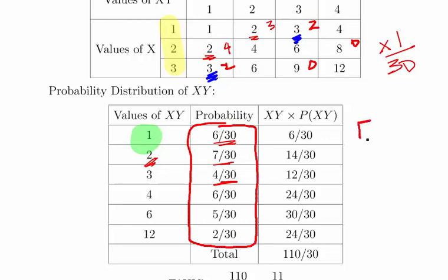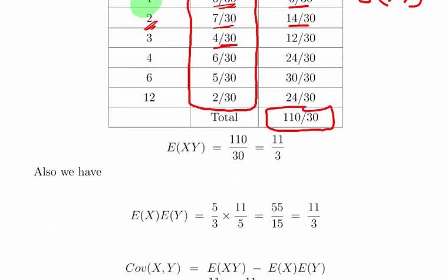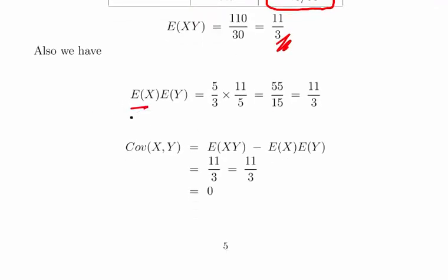So what we're going to do is calculate the expected value of xy. For each value of xy we multiply it by its probability and add them all up. So 1 times 6 over 30 gives 6 over 30, 2 times 7 over 30 gives 14 over 30, and so on. What we end up with is 110 over 30, which is 11 over 3. So the expected value of x times the expected value of y is 5 over 3 times 11 over 5, which is 55 over 15, which is 11 over 3. So when we work it out the covariance — which is E(xy) minus E(x)·E(y) — these two values are equal to each other, and therefore the covariance of x and y is equal to 0.